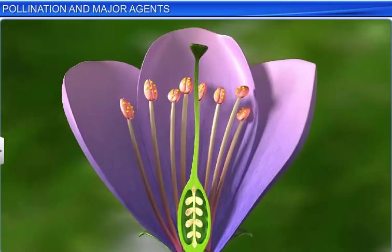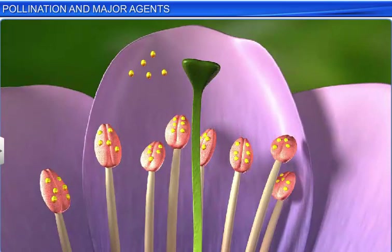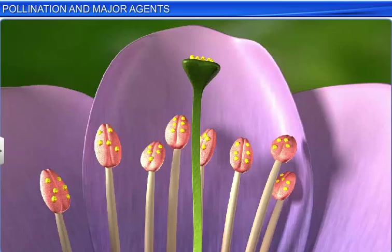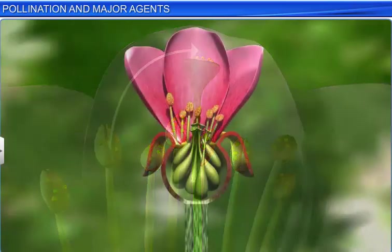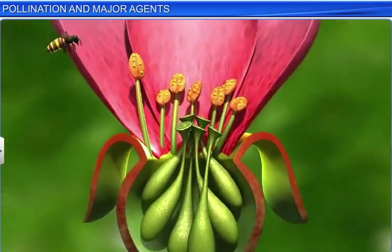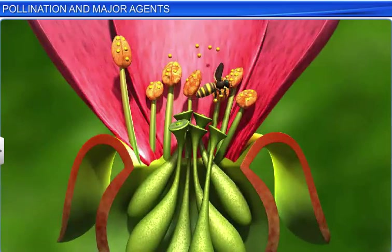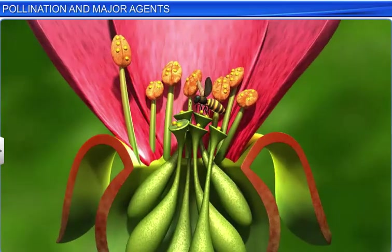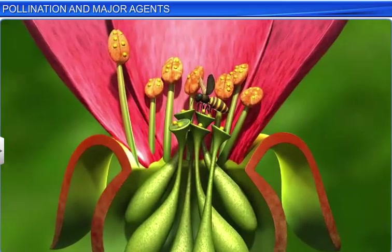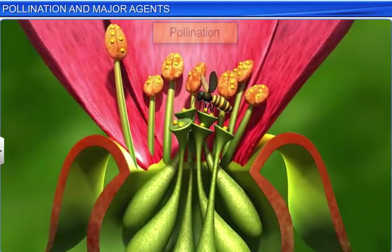However, since the gametes are immotile, pollen grains have to be transferred to the stigma. This process of transfer of pollen to the stigma of a flower, brought about by agents such as insects, wind and water, is called pollination.